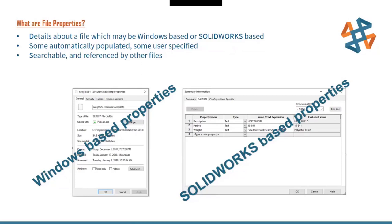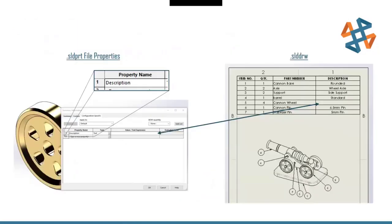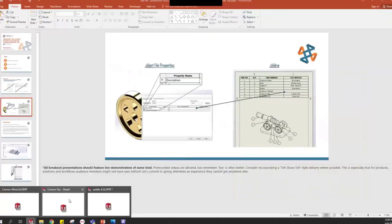Some properties are automatically populated and some are user-specified — we're going to be talking about the user-specified ones. File properties are searchable and can be referenced by other files. For example, in a bill of materials on a drawing, if the description is missing from one of the parts like the cannon wheel, we can open the actual part file and go to file properties to see that the description is missing. Let me jump over to SOLIDWORKS and fix that quickly.